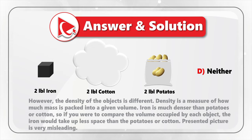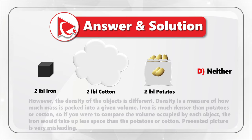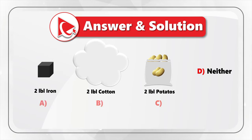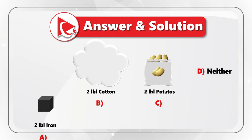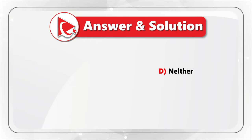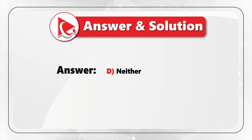Iron is much denser than potatoes or cotton. If you compare the volume occupied by each object, the iron will take up less space than the potatoes or the cotton. The presented images are very misleading and were designed to confuse you. So the correct answer is Choice D — neither object, since neither object is the heaviest.